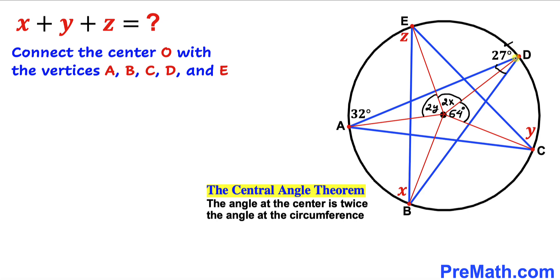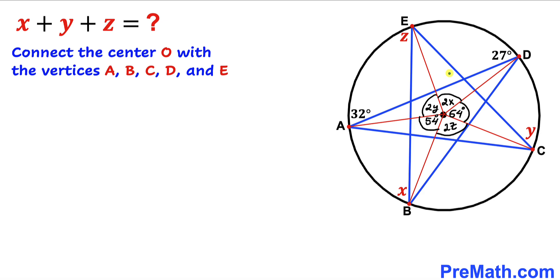Now let's focus on angle D, which is 27 degrees at the circumference. The corresponding angle at the center is twice that, so it becomes 54 degrees. Finally, angle E is z at the circumference, so the angle at the center is going to be twice that, becoming 2z.